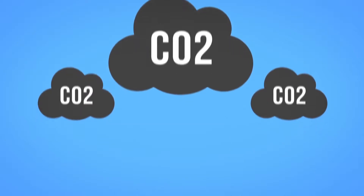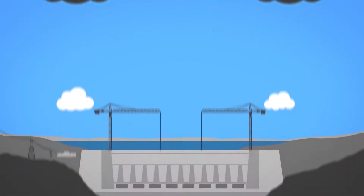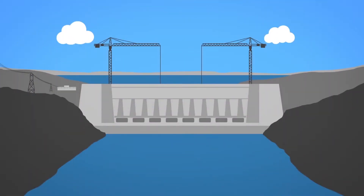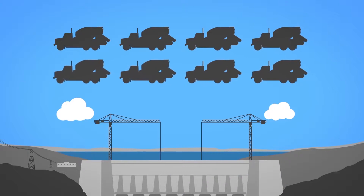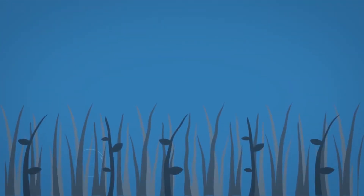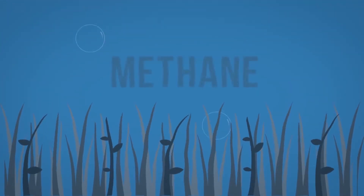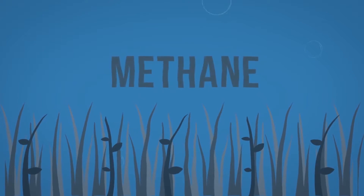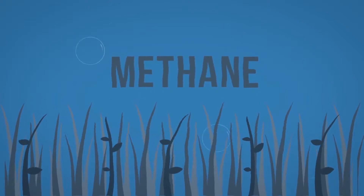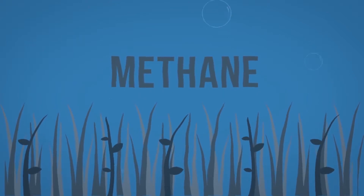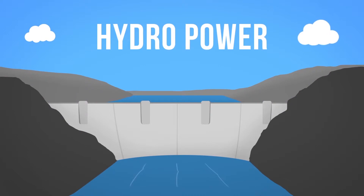Hydro plants are also not completely free of greenhouse gas emissions. Carbon dioxide emissions happen during construction, particularly due to the large quantities of cement used. Plant matter in the flooded areas also produces methane, another greenhouse gas, as it decays.